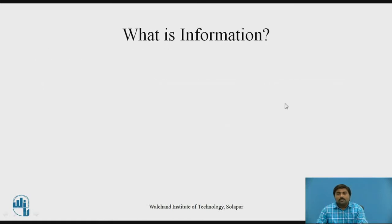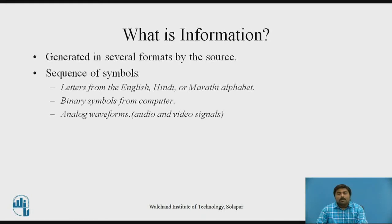Now let's start with what is meant by information. Information is generated in several formats by the source, as we've seen in the communication system. It may be English, Marathi, Hindi, or any regional language alphabet series. Or it may be a binary input sequence generated by a computer, or it may be analog waveforms, which are audio and video signals.